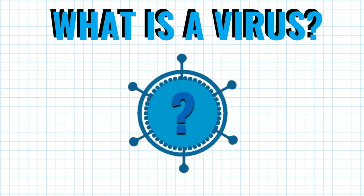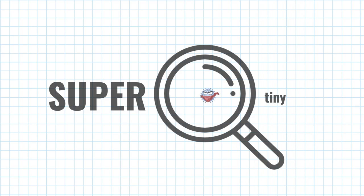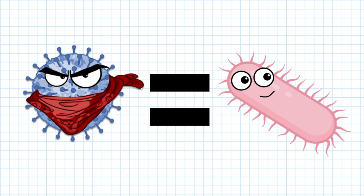A virus is defined as a super tiny infectious particle that can reproduce only by infecting a host cell. Viruses are often confused with bacteria, and even though they both make us sick, bacteria and viruses are very different at the biological level.